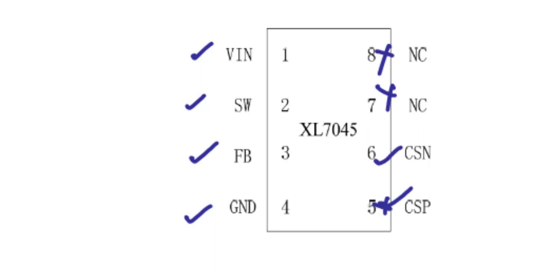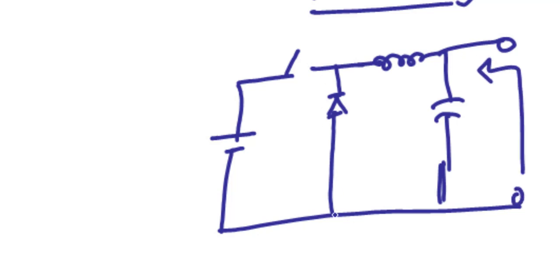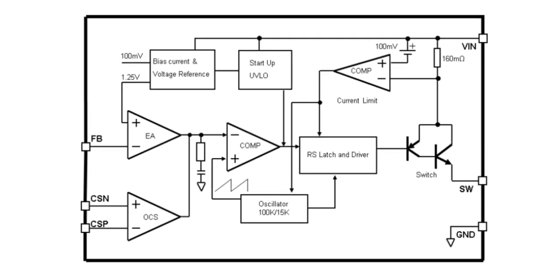To overcome the limitations of potential divider circuits, we use a DC-DC converter. Generally a DC-DC converter includes a switch, an inductor, a capacitor, and a freewheeling diode — so that energy stored in the inductor freewheels through the diode and voltage does not flow back. The switch can be a MOSFET or IGBT depending on the power level, and this switch itself requires a power supply — which is why the XL7045 circuit is excellent.